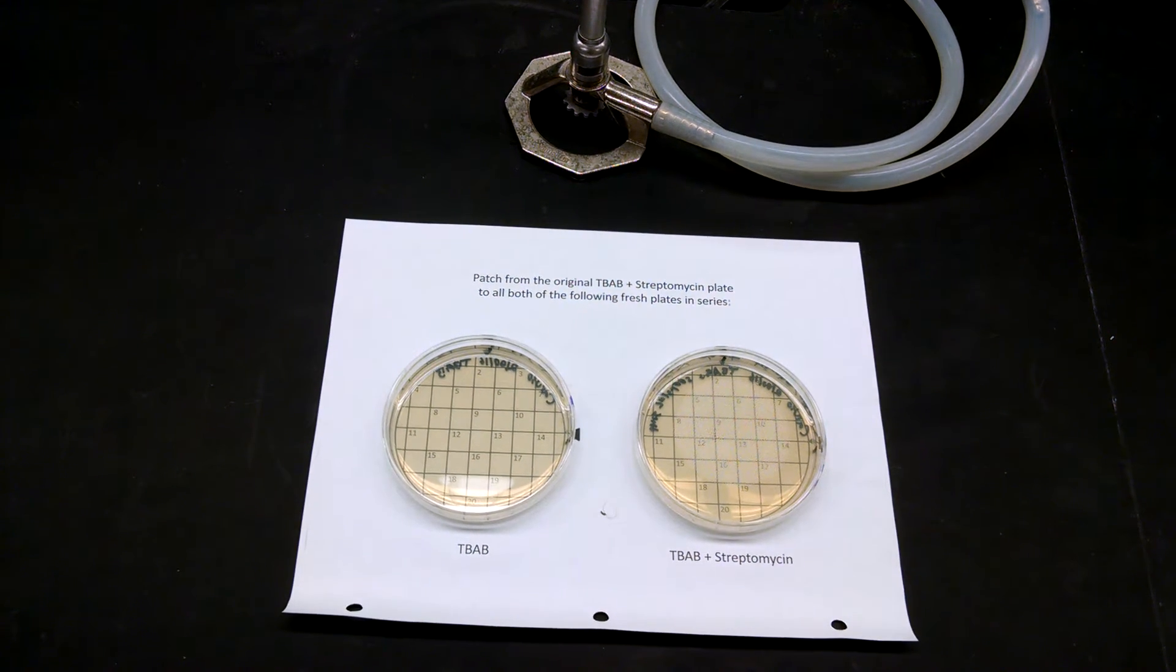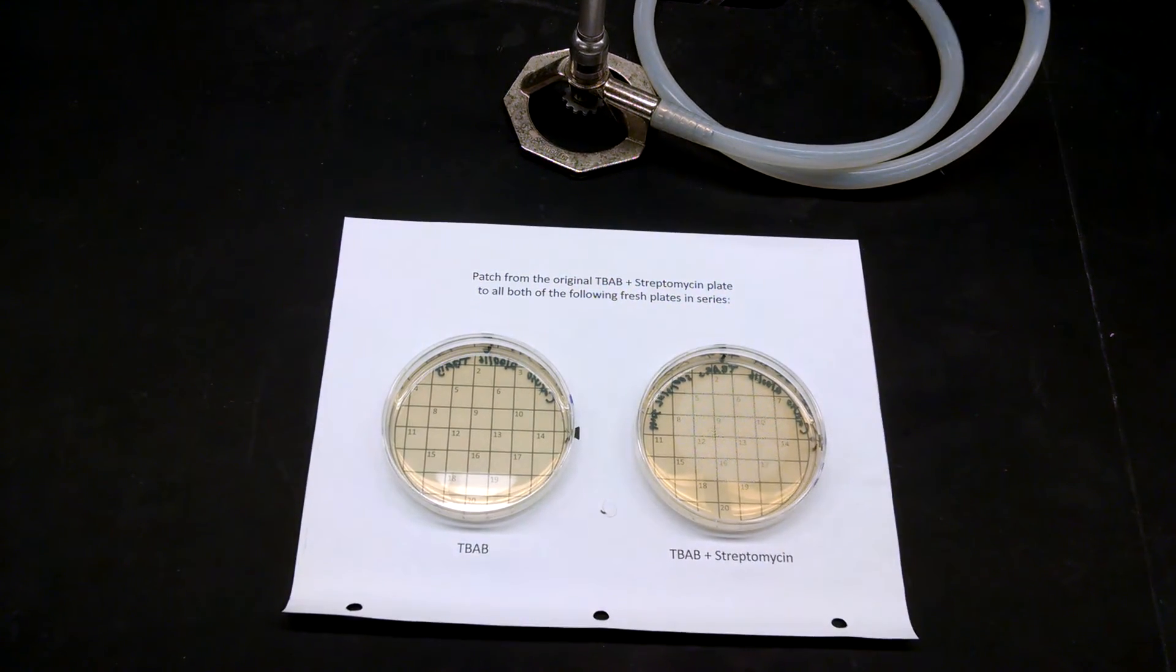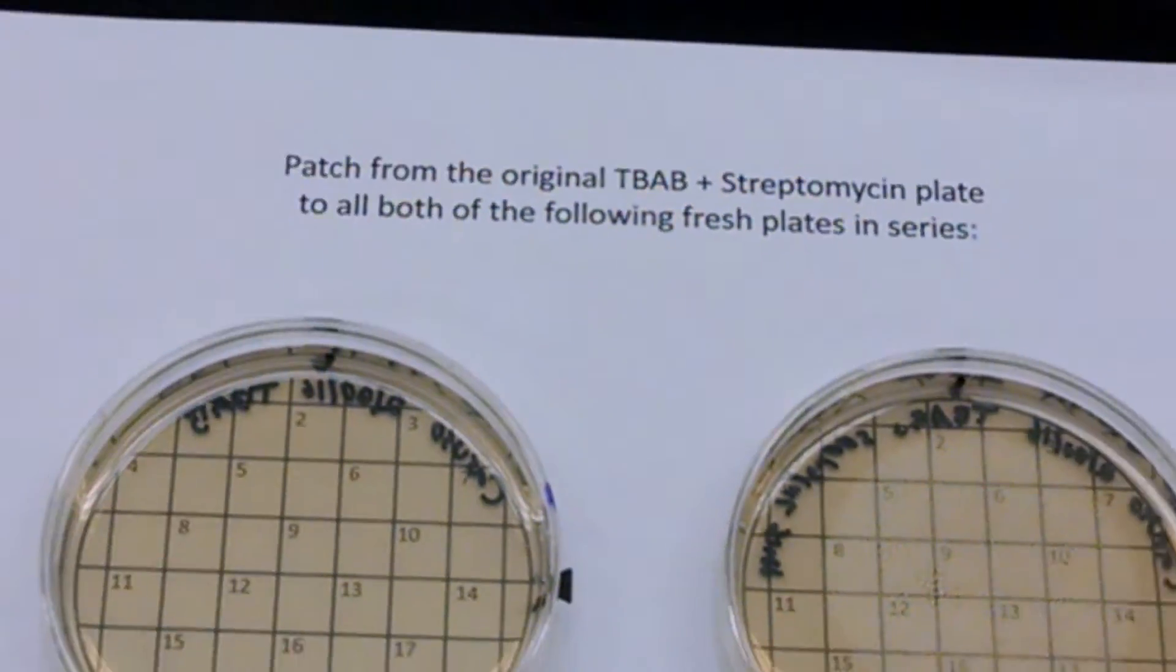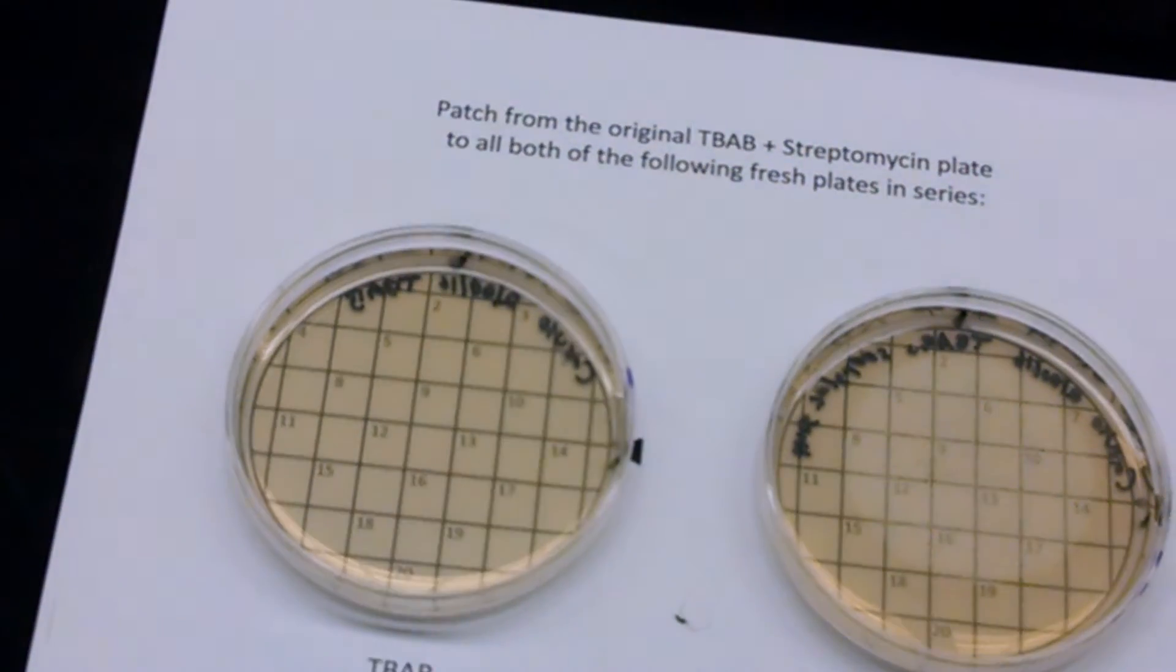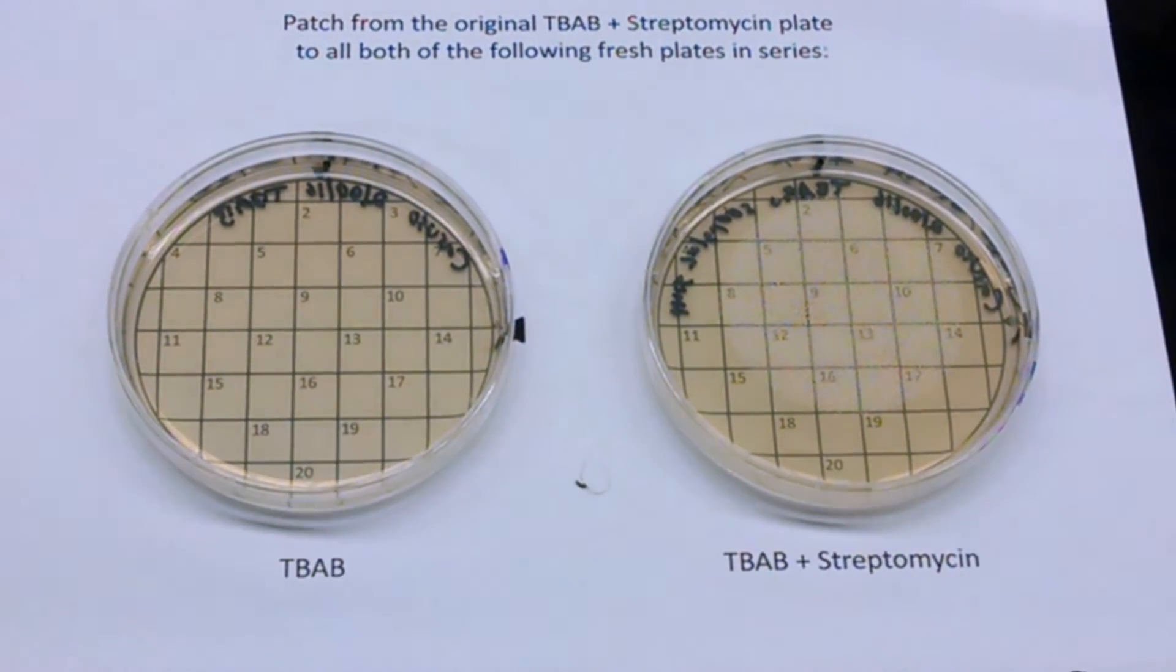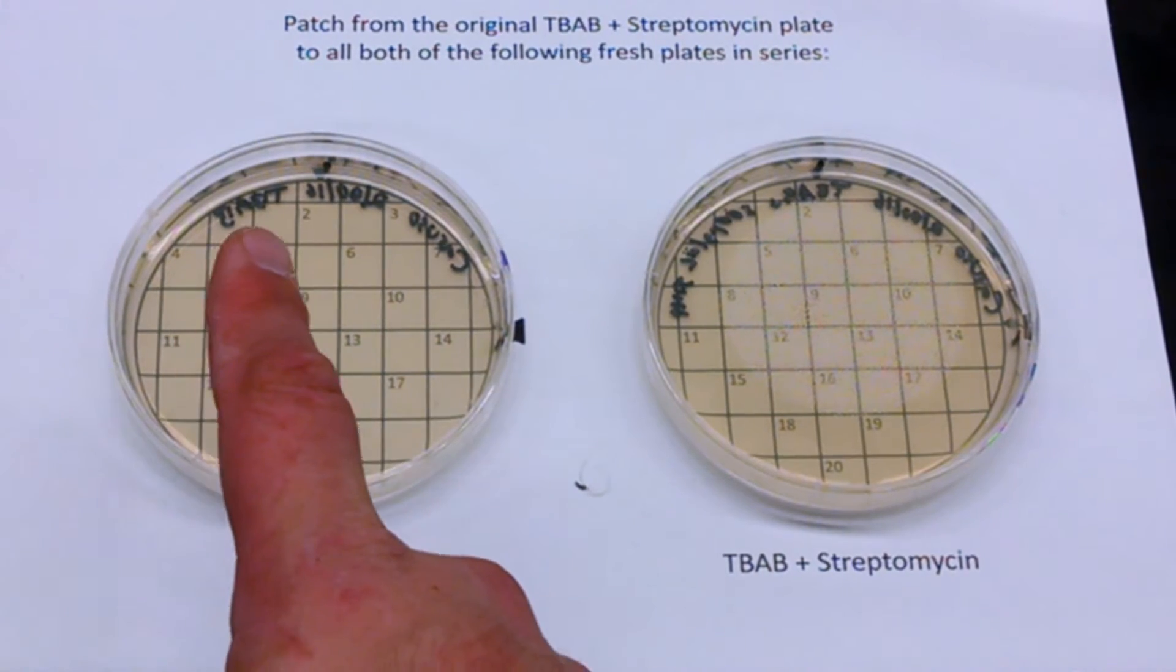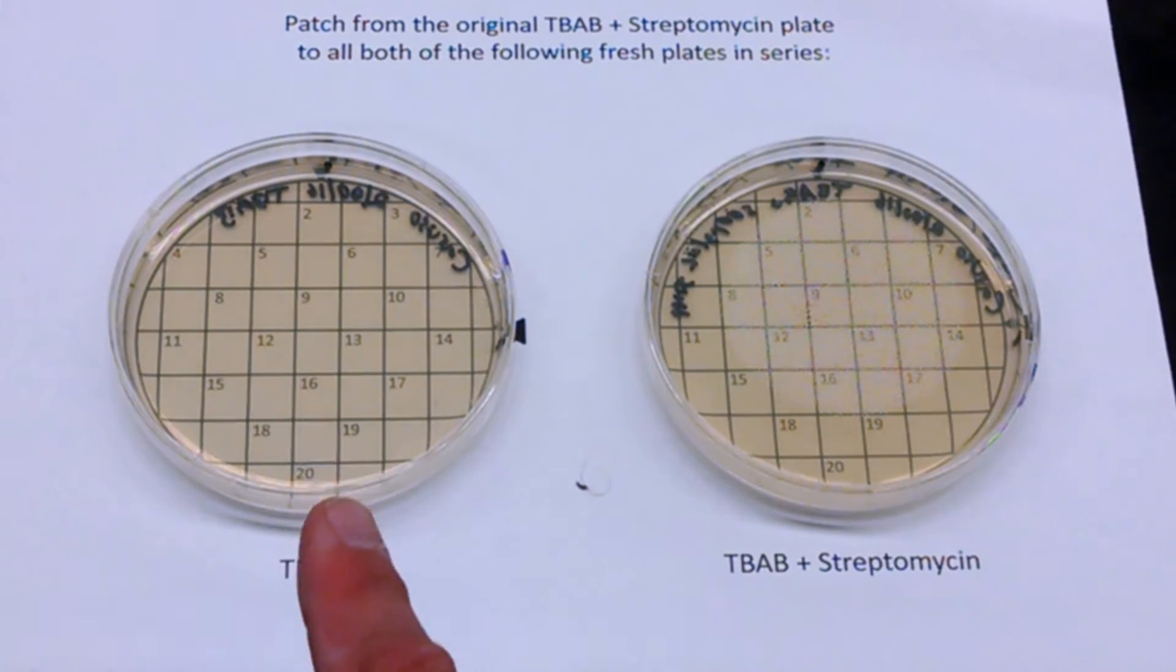Ah, I can. All right. Very good. And so what you will see is I've given you a grid underneath it, and the grid goes from 1 to 20. So you're going to be able to patch up to 20 colonies on here.